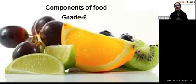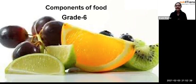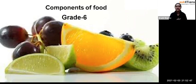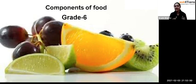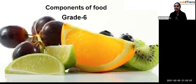Hello students, welcome back to the session. We are continuing this chapter on the components of food. In the last session, we discussed carbohydrates and proteins — both are energy suppliers for our body. By consuming carbohydrates and proteins, we get energy to do work, and this applies to plants and animals as well.